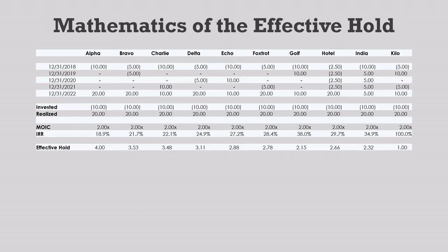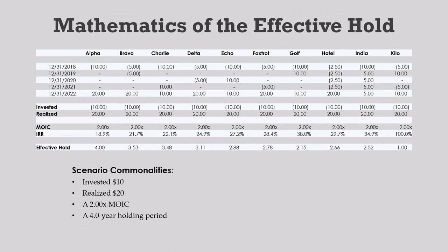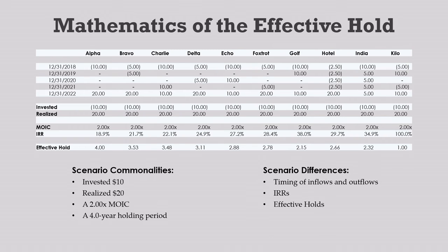Here's a set of 10 different cash flow scenarios. They all have four things in common: in every case, we invest 10, return 20, have a 2x multiple of invested capital, and a four-year holding period. However, the timing of all the cash flows is different, so they have different IRRs and different effective holds.